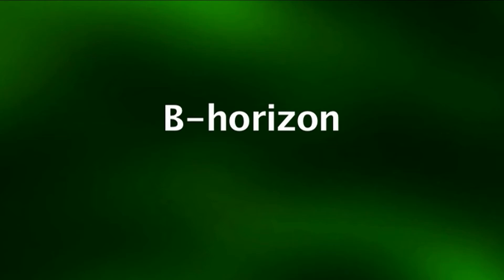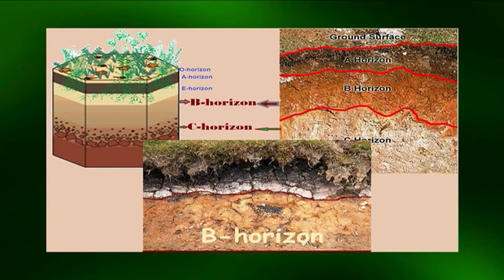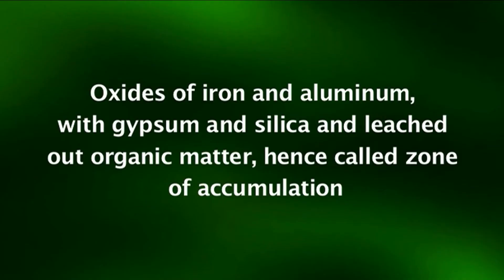The B horizon is the illuviated subsurface horizon underlying O, A, and E horizons, and is commonly referred to as subsoil. It contains mainly silicate clay or minerals such as oxides of iron and aluminium, with gypsum and silica, and leached-out organic matter — hence called the zone of accumulation. This horizon shows removal or addition of carbonates and coatings of sesquioxides, resulting in higher chroma.